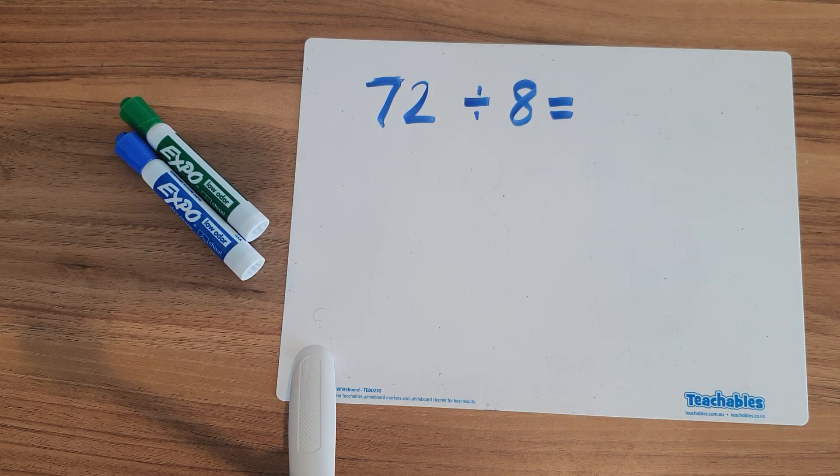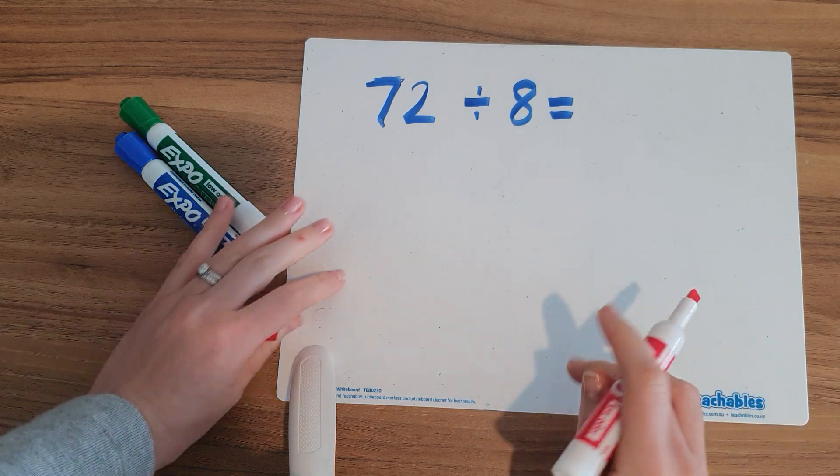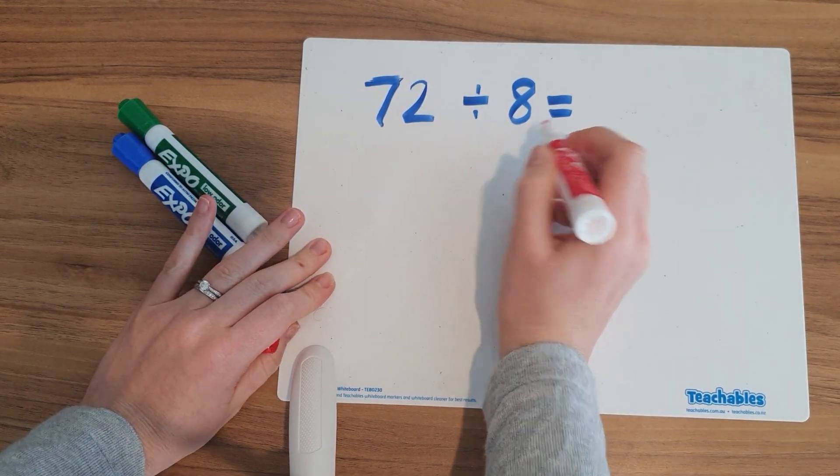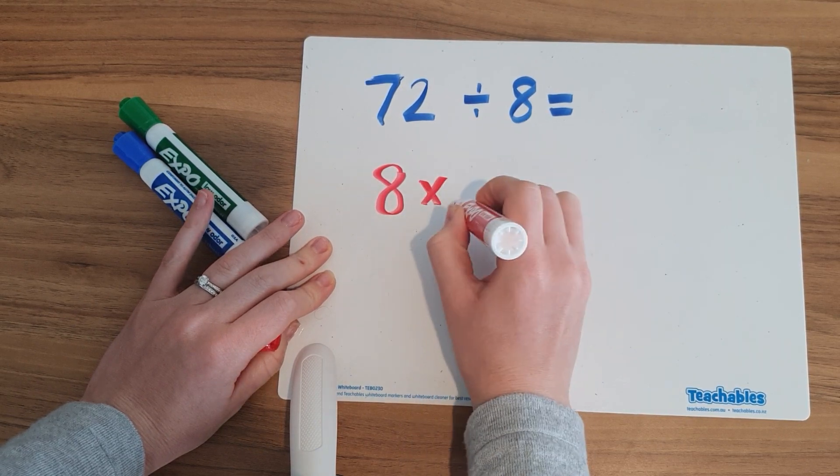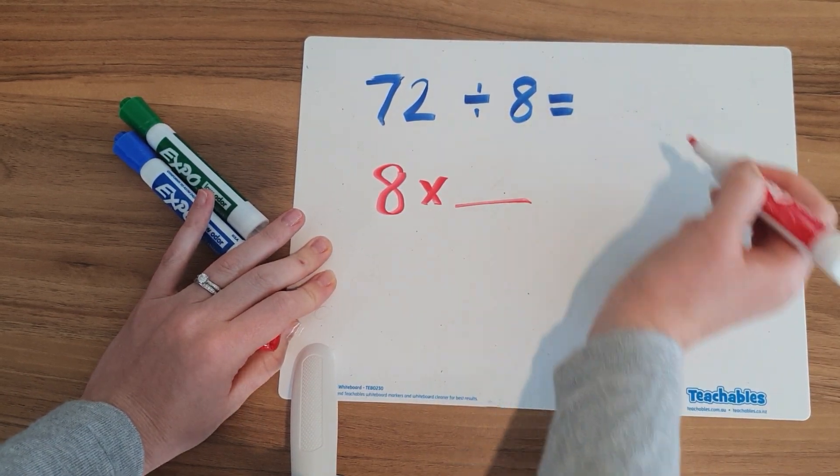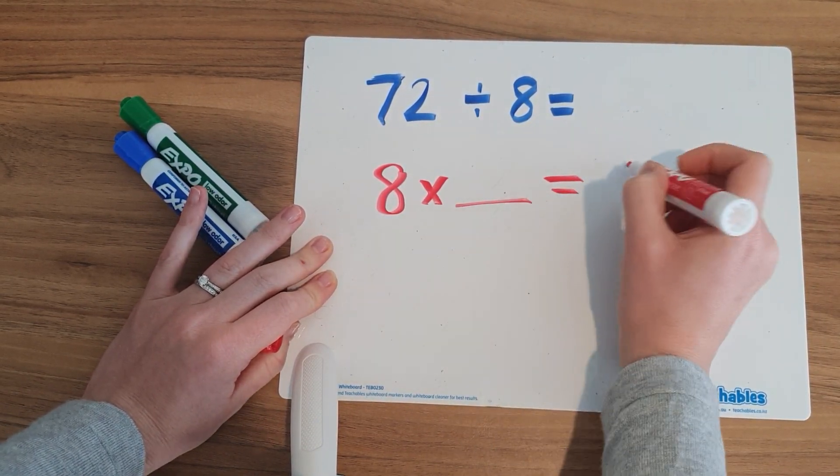So I'm going to flip the operation to be the inverse of itself. So I'm going to use what we know, so 8 times something, because that's the unknown number here, equals 72.